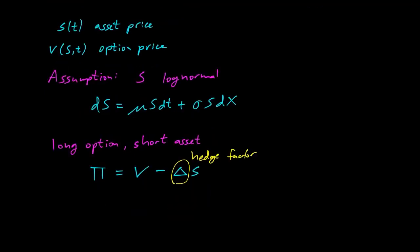We're trying to hedge changes in the asset price against the option price, so that if the asset price changes a little bit, our position does not change in value at all. We'll have to keep re-hedging every time step — this is a dynamic hedge. We don't know what delta is yet, but we'll figure it out pretty soon.